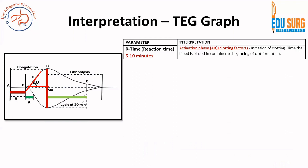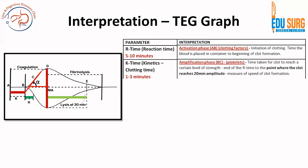A to B is the reaction time or R time, with a normal range of 5 to 10 minutes. This is also known as the activation phase, and it is basically the time from when blood is placed in the container to the beginning of clot formation. This activation phase relies on the clotting factors. So the R time normal range is 5 to 10 minutes, also known as the activation phase, and is dependent on the clotting factors.